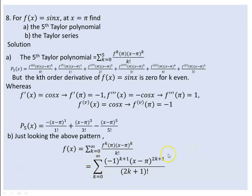This is the Taylor series for f(x) = sin(x) at x = π. The series is expressed with (-1)^(k+1), and when k = 0 gives -1, k = 1 gives +1, and so on, matching the computed derivative values. I hope you have understood it.